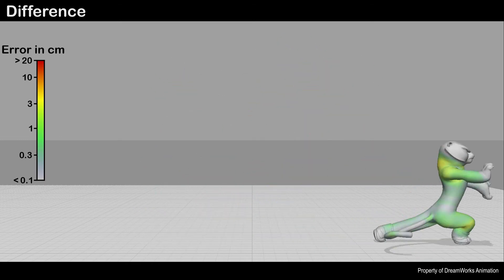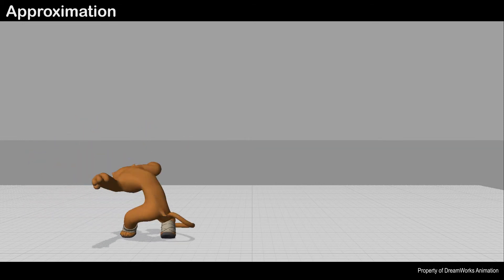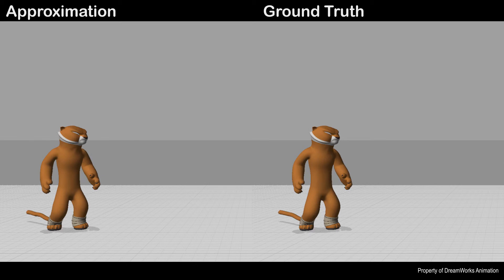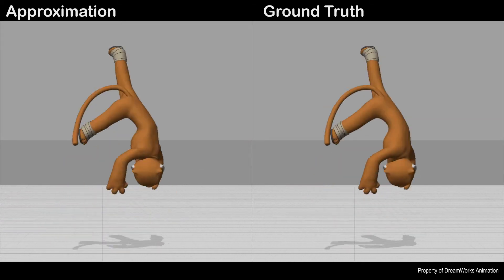The average approximation error across the entire animation is 2 millimeters and the largest error is 190 millimeters. Despite these errors, our approximated deformations still closely resemble the original animation.